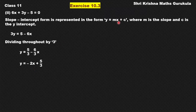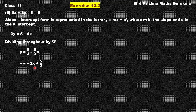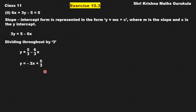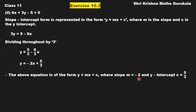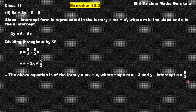Comparing with the standard form y equals mx plus c, the coefficient of x gives us the slope, which is minus 2, and the constant term is the y-intercept, which is 5 by 3. So we have reduced it to slope-intercept form and on comparing we get slope as minus 2 and y-intercept as 5 by 3.